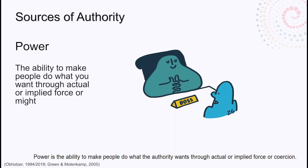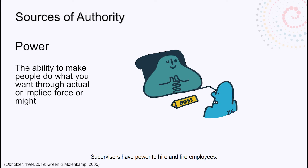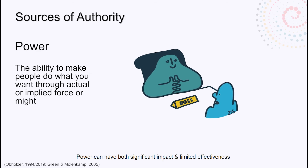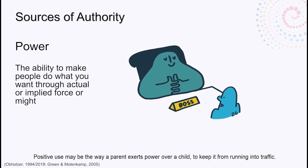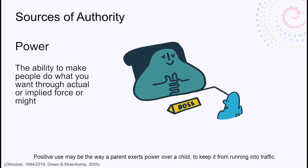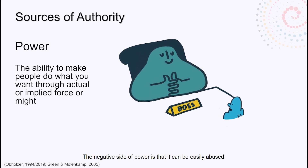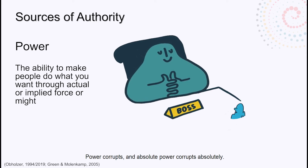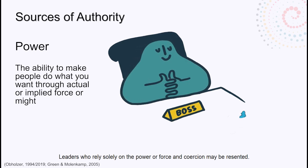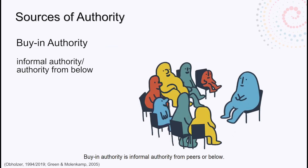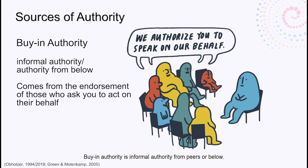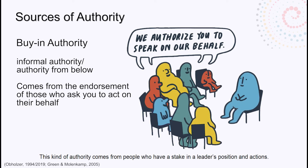Power may come from one's formal authority or station. Power is the ability to make people do what the authority wants through actual or implied force or coercion — it is the ultimate influence over people and resources. Supervisors have power to hire and fire employees. Power can have both significant impact and limited effectiveness, and may be used in either positive or negative ways. A positive use may be the way a parent exerts power over a child to keep it from running into traffic. The negative side of power is that it can be easily abused — power corrupts, and absolute power corrupts absolutely. Leaders who rely solely on power or force may be resented. Buy-in authority is informal authority from peers or from below — it comes from the endorsement of those who ask someone to take up a role on their behalf, from people who have a stake in a leader's position and actions. This kind of authority can be very effective for lasting change.